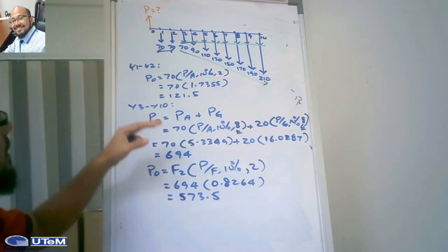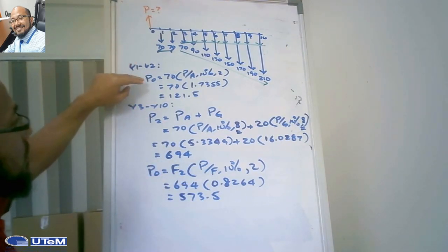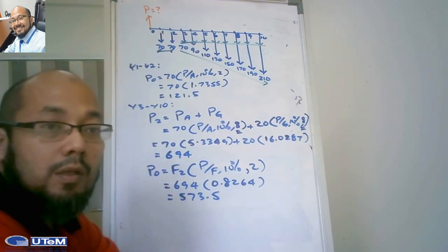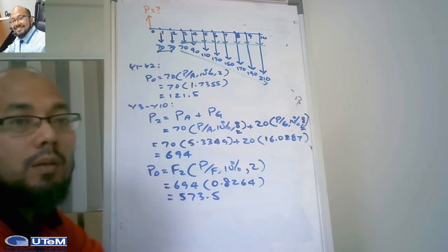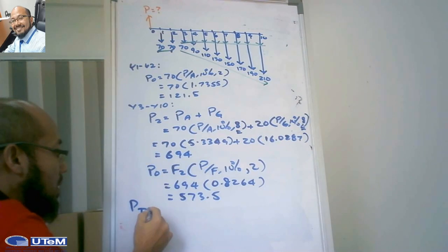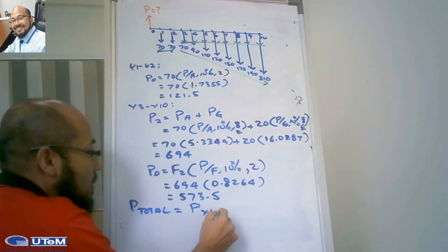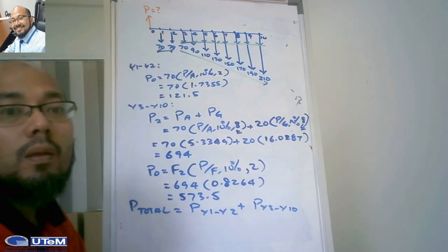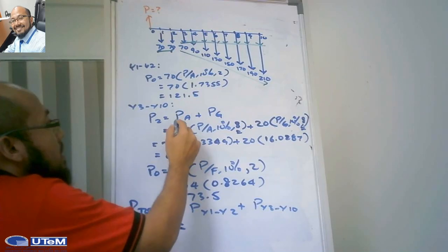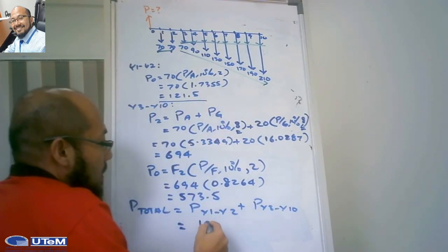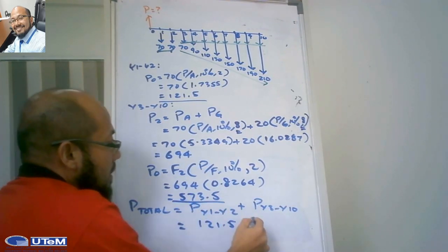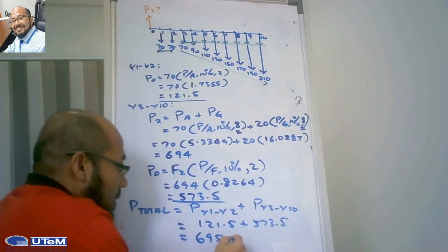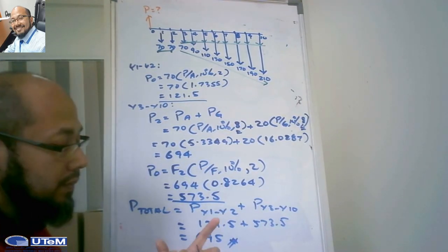Now we have transferred the cash flow series from year 1 to year 2 to P0, and the cash flow series from year 3 to year 10 we transferred to P0. So the total is P from year 1 to year 2, which is 121.5, plus P from year 3 to year 10, which is 573.5. So P total is 695.